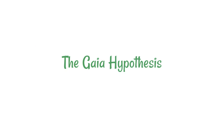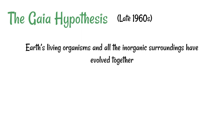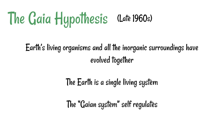Next up is the Gaia Hypothesis, by James Lovelock. He created it in the 1960s and it's basically the idea that the Earth's living organisms and all of their organic surroundings have evolved together, and we can view the Earth as a single living system. This Gaia system also kind of regulates itself — just like when it gets too hot outside you sweat to cool down, the Earth behaves in a similar way. When more carbon dioxide is emitted, more plants absorb it and the system returns to balance.